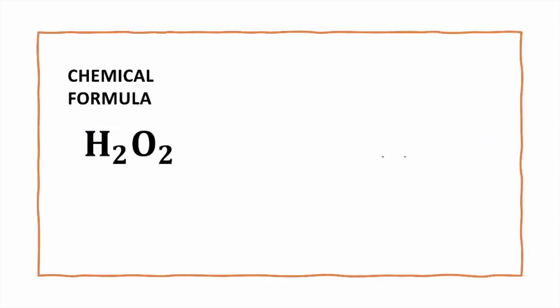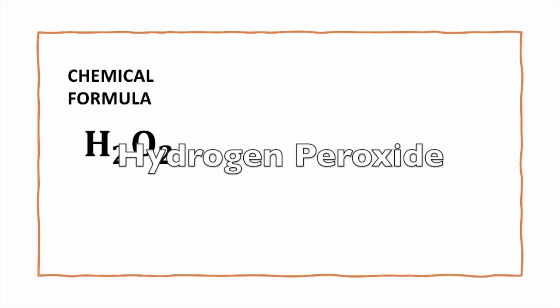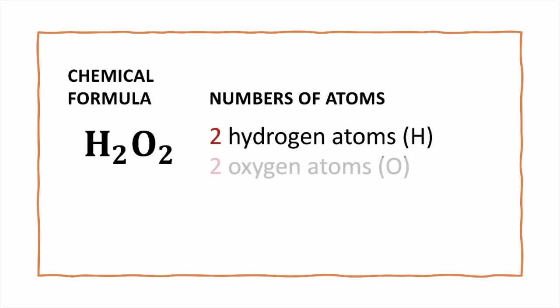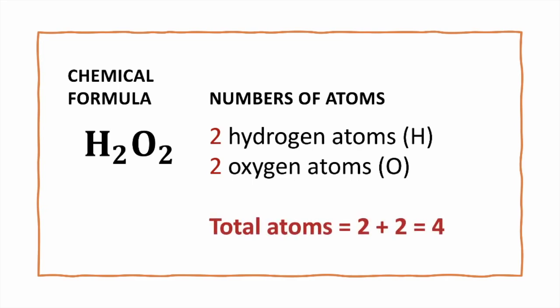Now let's do another one. We have H2O2 — this is different than H2O. This is hydrogen peroxide. The subscript 2 next to the H means we have two hydrogen atoms, and the subscript 2 to the right of the O means we have two oxygen atoms. If we want to count our total atoms, 2 plus 2 equals 4.